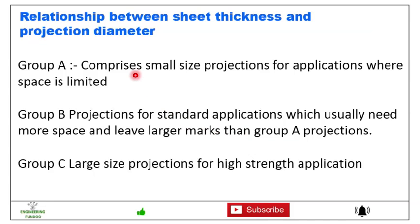Then here we have different relationships between the sheet thickness and the projection diameter. We have three groups. Group A comprises small size projections for applications where space is limited. Group B is for projections for standard applications which usually need more space and leave larger marks than Group A projections. Group C is for large size projections for high strength applications.